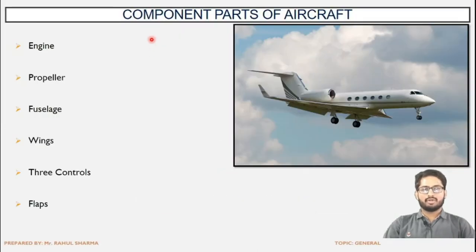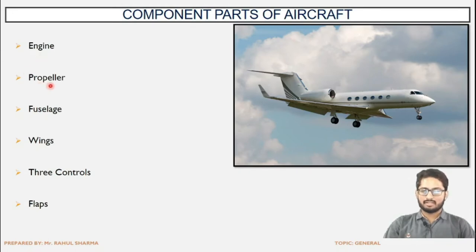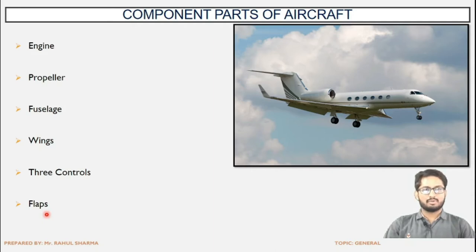The first topic which we are going to learn today are the component parts of the aircraft — what are the basic components and what are their functions: engine, propeller, fuselage, wings, three controls, and flaps. We will be seeing what these components are, where they are placed, and what their specific functions are. The engine basically moves the aircraft.